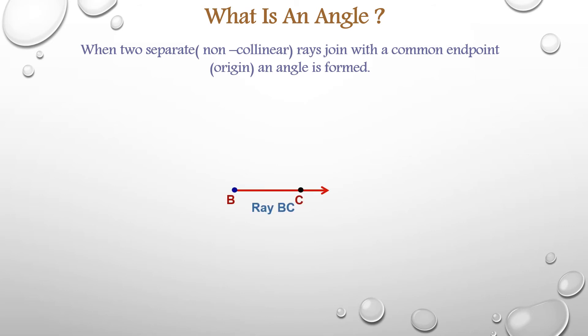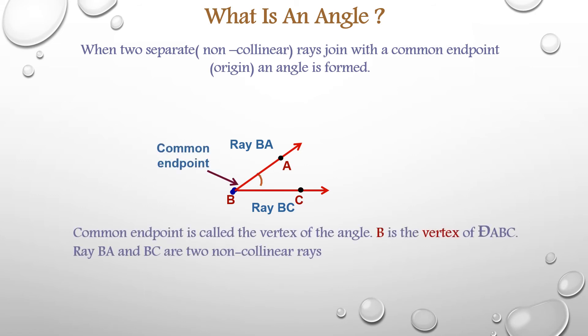For example, here you can see ray BC. Another ray, Ray BA. When these two non-collinear rays, it means two separate rays, meets each other in the point B, it forms an angle.